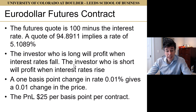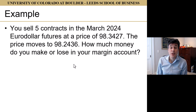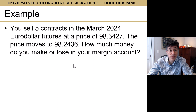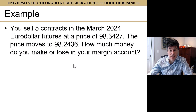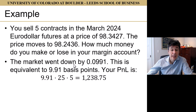The P&L per basis point is $25. So a one basis point change in rate — the rate goes from 5.1089 to 5.1189 — will give $25 in P&L per contract. For example: you sell five contracts in the March 2024 Eurodollar futures at a price of 98.3427. The price moves to 98.2436. The market went down by 0.0991, which is equivalent to 9.91 basis points. Thus, your P&L is 9.91 times $25 per basis point times 5 contracts, which equals $1,238.75.